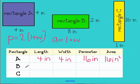All right, let's take a look at rectangle B. I have a length of eight inches and a width of two inches. So perimeter equals two times eight plus two. Eight plus two is 10. Two times 10 is 20. So my perimeter of rectangle B is 20 inches.